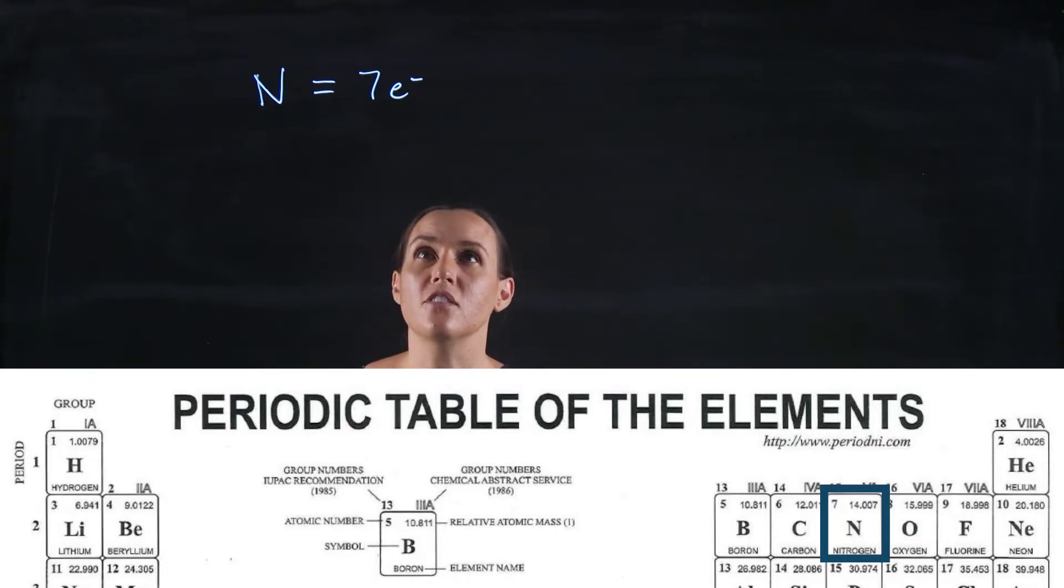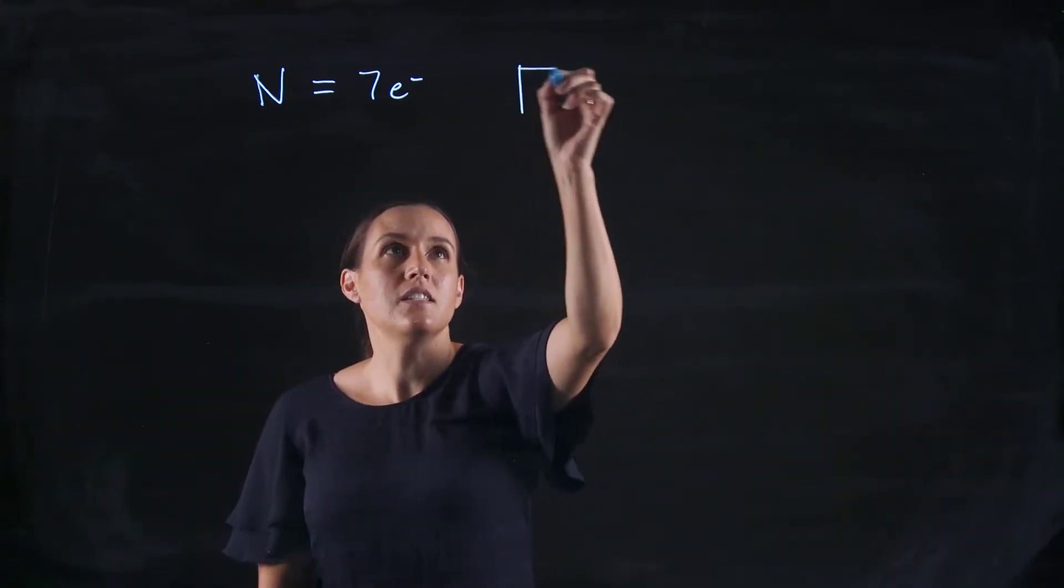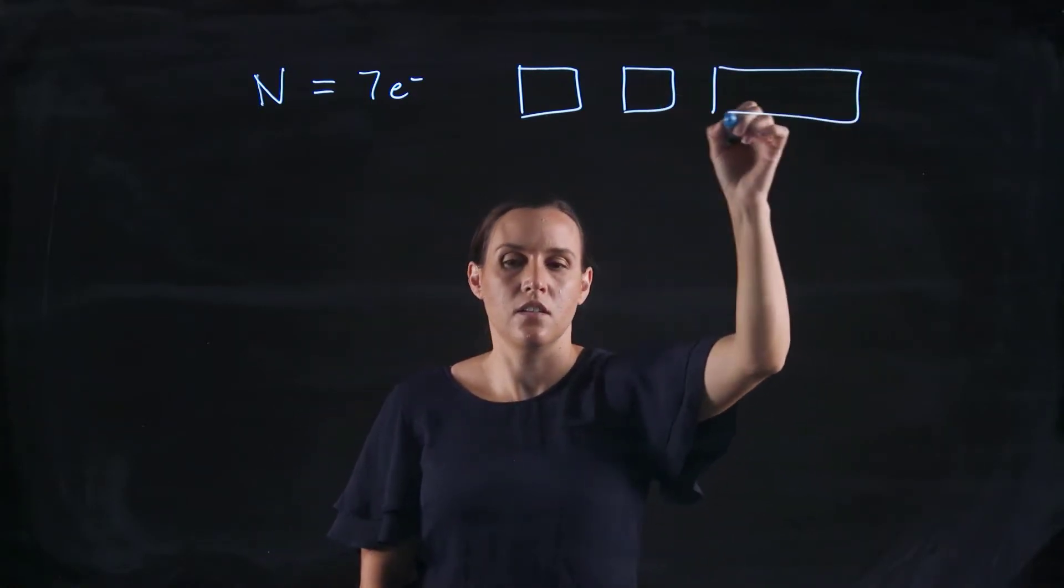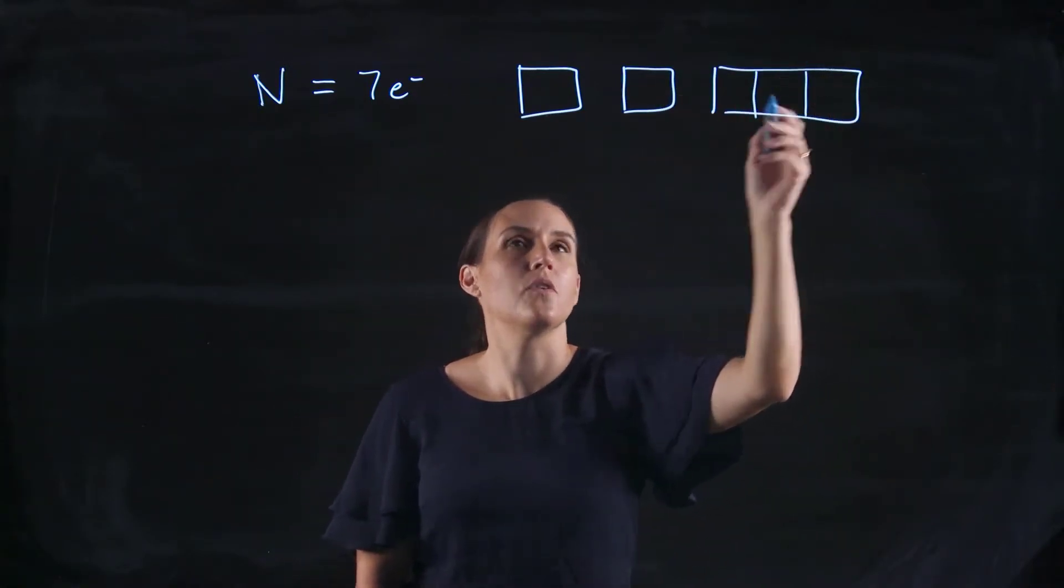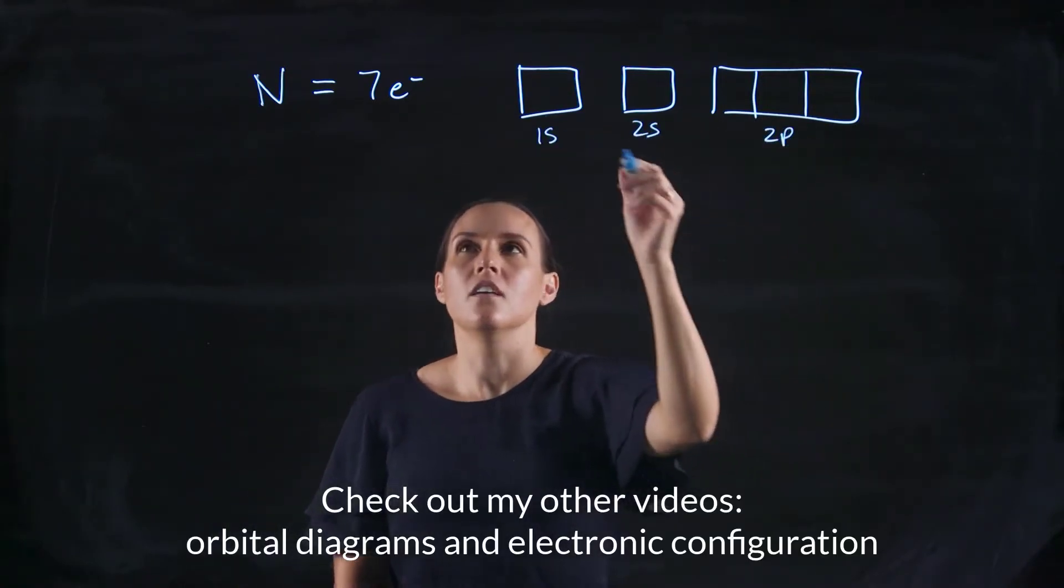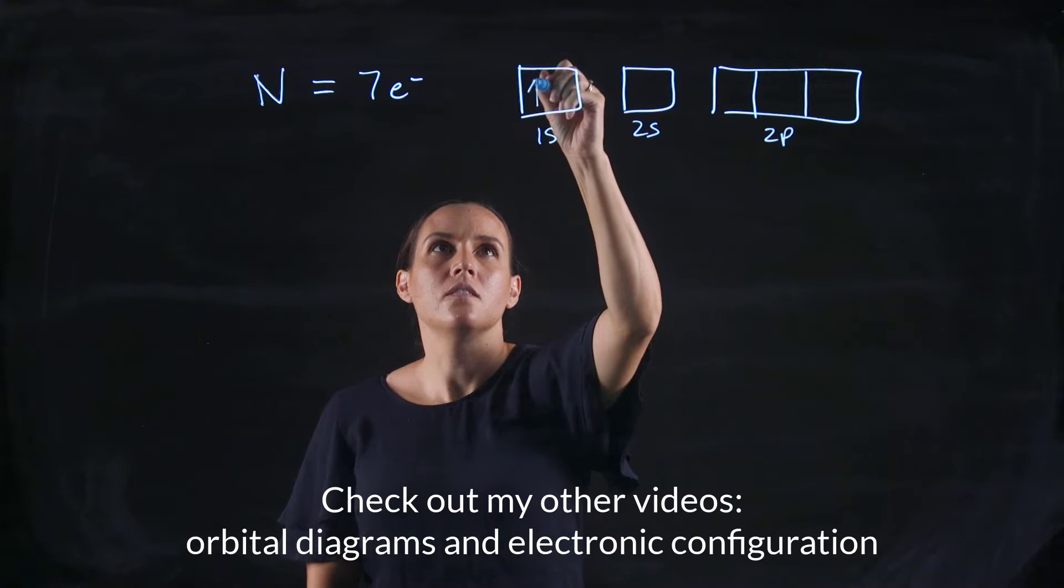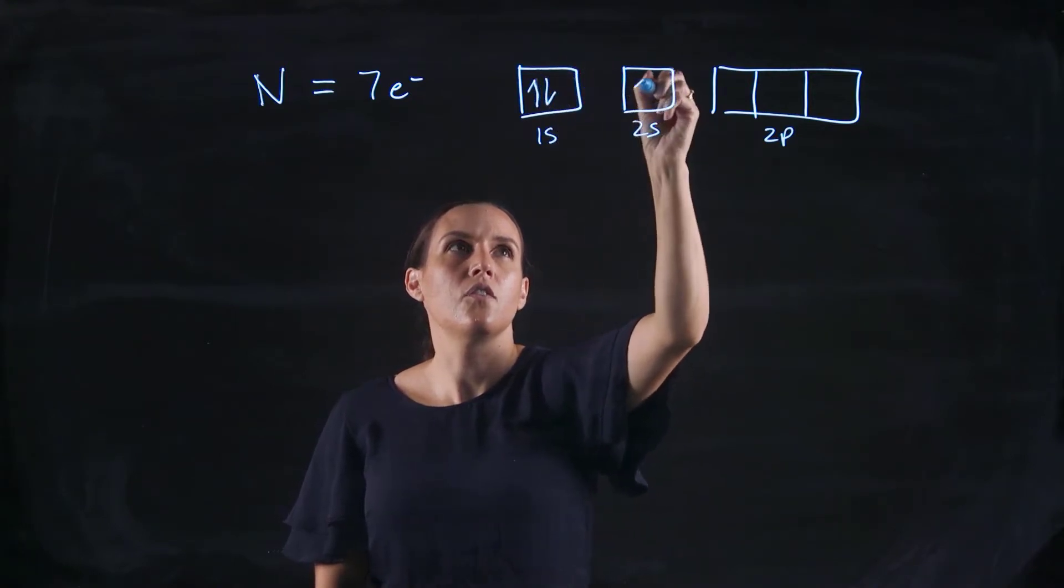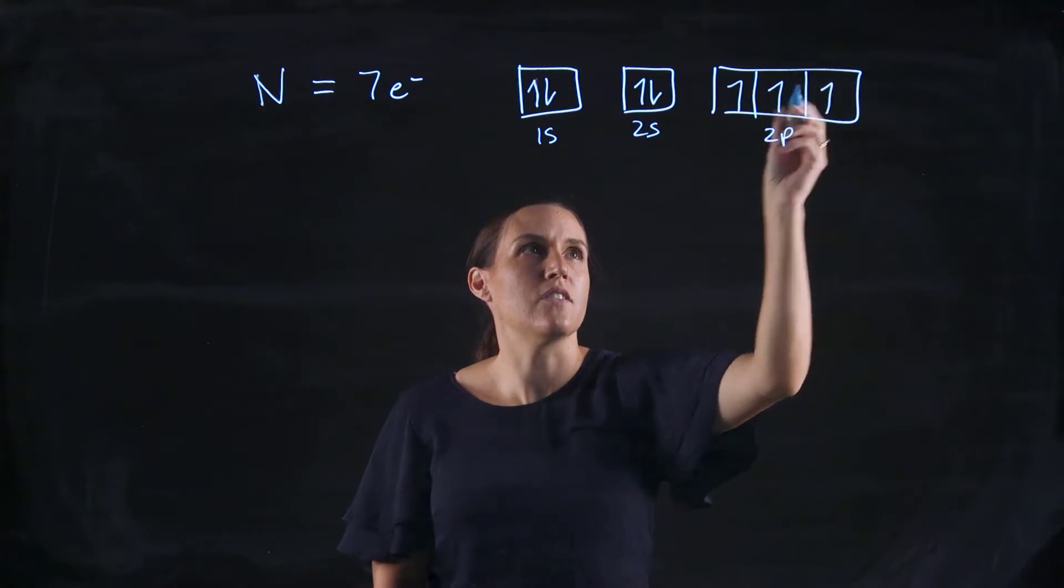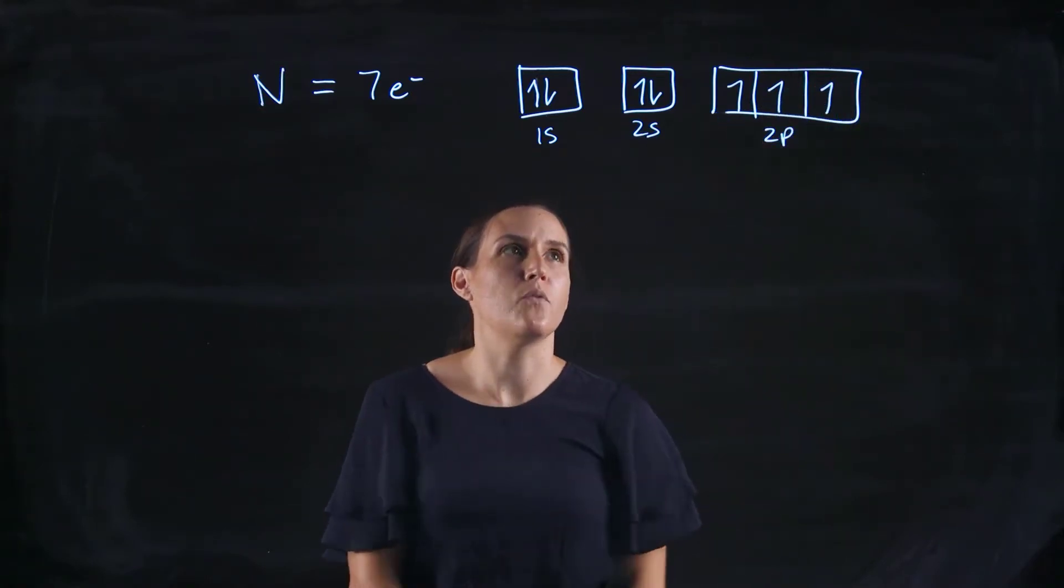Now these seven electrons would exist like this. If we fill out our orbital diagrams, we've got our 1s, our 2s and our 2p. So we'd get 1, 2, 3, 4, 5, 6, 7. So that would be how our orbital diagram would look.